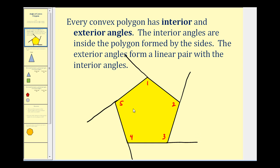Notice we have a five-sided polygon and I extended five sides to form the exterior angles. Angle six forms a linear pair with angle one and is therefore an exterior angle. The remaining exterior angles are angle seven, eight, nine, and ten. Each of the blue angles forms a linear pair with the red interior angles.